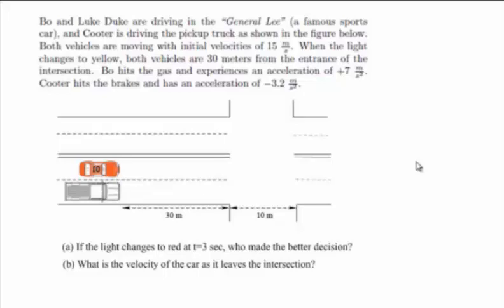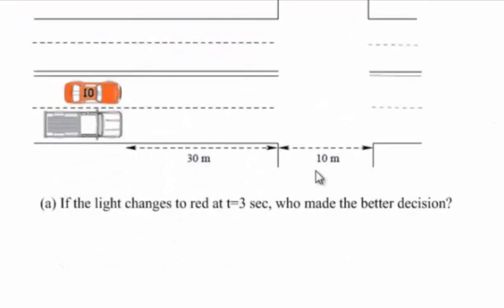Part A asks us, if the light changes to red at t equals 3 seconds, who made the better decision? There is no physics equation for decision. What we're going to have to do is formulate an appropriate question that helps us decide whether the decision to hit the gas is appropriate or whether the decision to hit the brakes is appropriate.